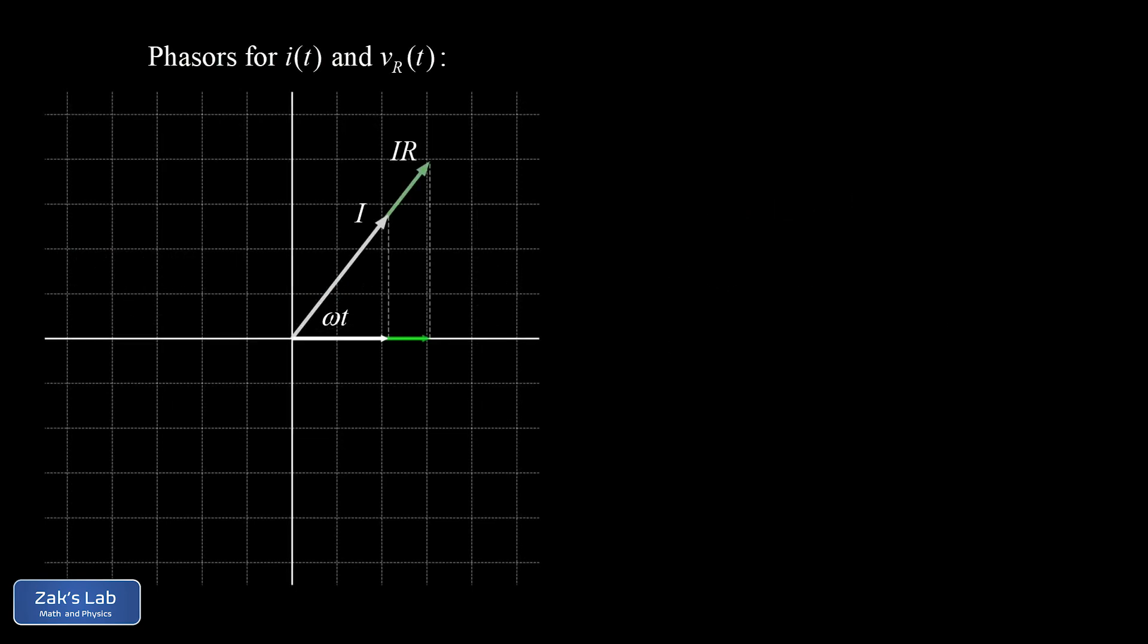And we can show this in a static phasor diagram of current and the voltage v sub R like this. So in this diagram, both vectors have their tails at the origin. The green vector is the phasor for v R with a length of IR. And the white vector is the phasor for little i of t, the current through the resistor. And again, the horizontal projections of these phasors give the actual time varying quantities we're trying to plot. So there's the current as a function of time. That's the horizontal component of the current phasor. And that's I times cosine omega t. And there's the voltage across the resistor as a function of time. That's big I, big R, cosine omega t.